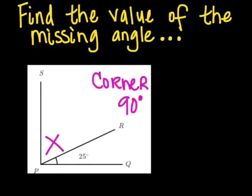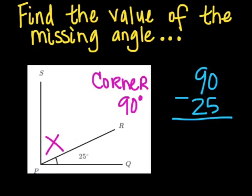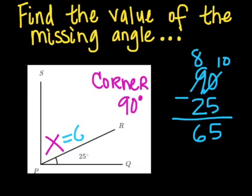So I need to take my perfect corner of 90, and I need to subtract the angle that is there, 25. I'm going to borrow, and I got 65. So that means this missing angle should be 65 degrees, because together they need to form that perfect corner or right angle equal to 90 degrees.